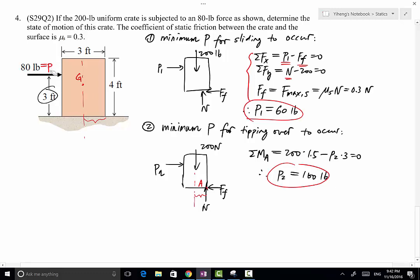And how do they compare to our 80 pound force? So if this force is actually smaller than P1, then the object will be stationary, will not be moving at all. However, this 80 pound force is bigger than the 60 pound force. Therefore, because of this, we can draw the conclusion that this box will be sliding.